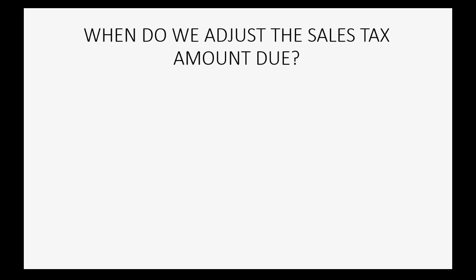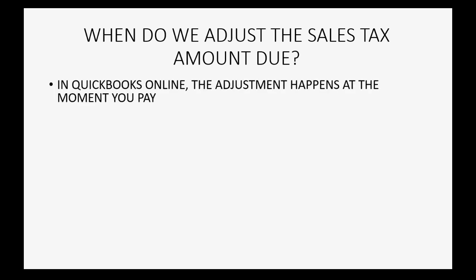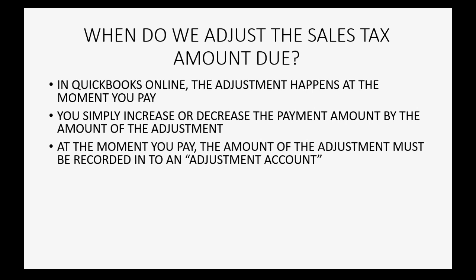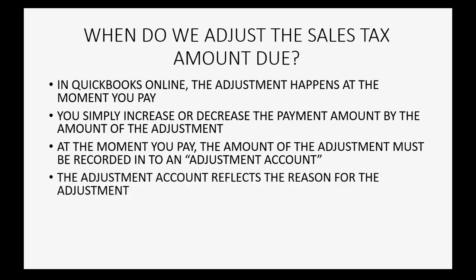So when do we adjust the sales tax amount due for these or other reasons? In QuickBooks Online, the adjustment happens at the moment that you pay. You simply increase or decrease the payment amount by the amount of the adjustment. At the moment you pay, the amount of the adjustment must be recorded into an adjustment account. The adjustment account reflects the reason for the adjustment.